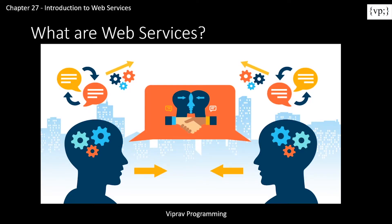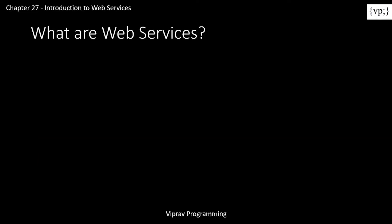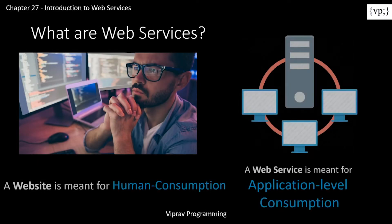So what are web services? Web services are the client-server applications that communicate using the HTTP protocol. They are the languages of web apps that are used to communicate. To clarify, websites are meant for human consumption — the stuff that you go on online, search on Google, that's a website. And web services are meant for application-level consumption; these are basically computers that use other computers to do computer stuff.